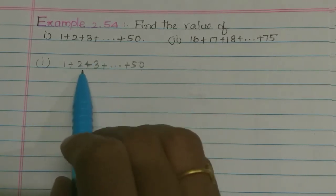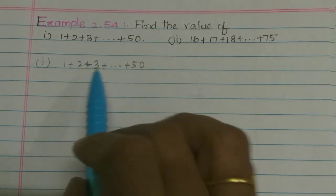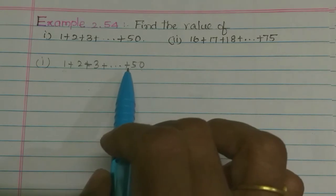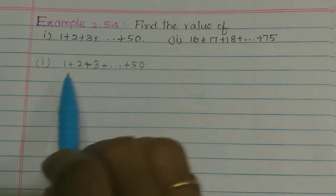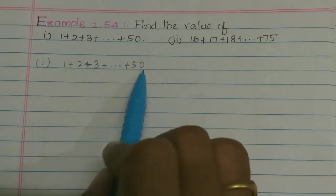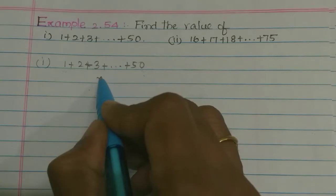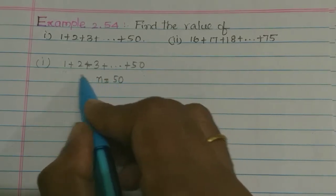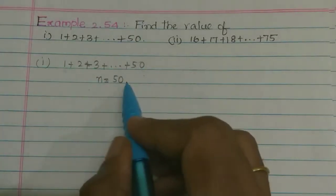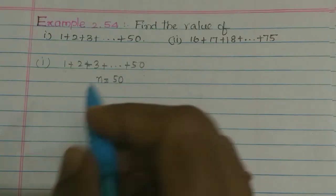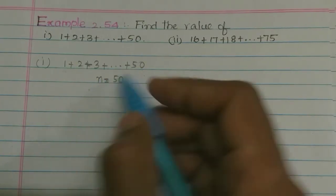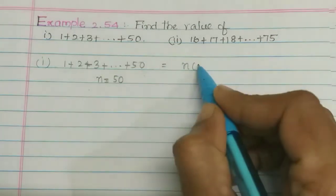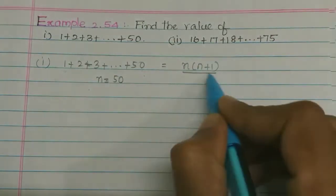Now you see 1, 2, 3 — so this is natural numbers. So we use the sum of N natural numbers formula. Here N is 50, so we have 50 numbers. The formula for sum of N natural numbers is N(N+1)/2.